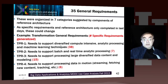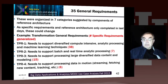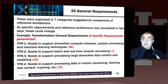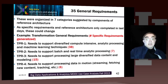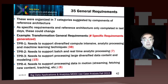Here are some transformation general requirements as an example. 38 specific requirements are summarized as a general requirement: need to support diversified, compute-intensive, and any processing machine learning techniques. Here we have seven specific requirements — by specific I mean they come from different use cases. They may not be stated the same way for each use case, but they were mapped into the same general requirement.